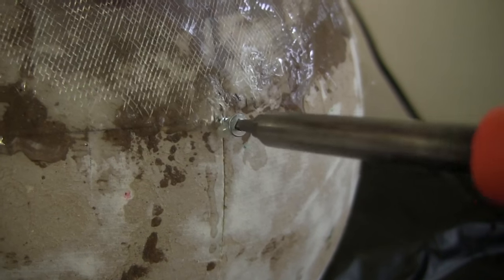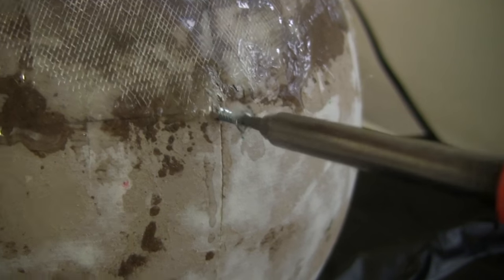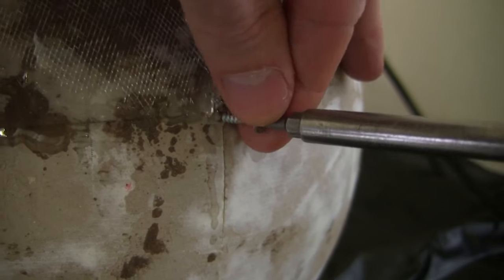After doing the first piece, I realize the fiberglass and resin are very transparent, and I can see the equator well. So I remove the screws.